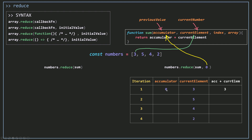Continuing: 8 plus 4 equals 12, accumulator becomes 12. Then 12 plus 2 equals 14. So when you call numbers.reduce with sum and initial value 0, you get the single value 14.